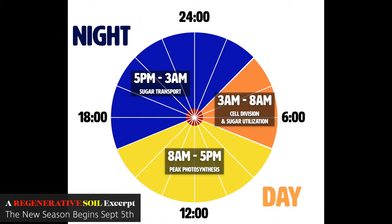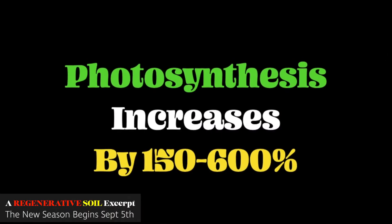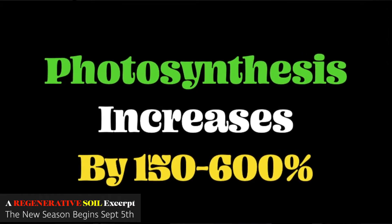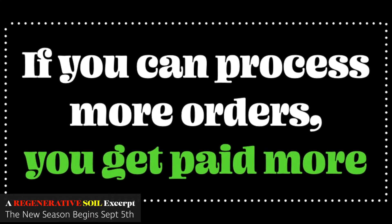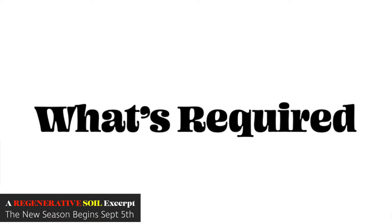Those sugars are used overnight — at night, plants aren't asleep; they're working very hard preparing for the next day. If they're not prepared and the sun comes up, it all starts over again and a backlog forms. But if a plant can manage all the sugars coming in from the sun, photosynthesis can increase by 150 to 600 percent. The more sugar that comes in through photosynthesis that you can properly handle, the more return on investment you get.